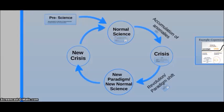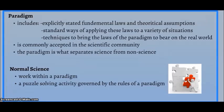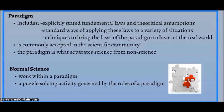Then there is normal science, which is characterized by a paradigm. The paradigm includes explicitly stated fundamental laws and theoretical assumptions, standard ways of applying these laws to a variety of situations, and techniques to bring the laws and paradigms to bear on the real world. This paradigm is commonly accepted in the scientific community, and the paradigm, Kuhn suggests, is what separates science from non-science. Normal science is work that is done within this paradigm. Kuhn described it as a puzzle-solving activity governed by the rules of the paradigm.